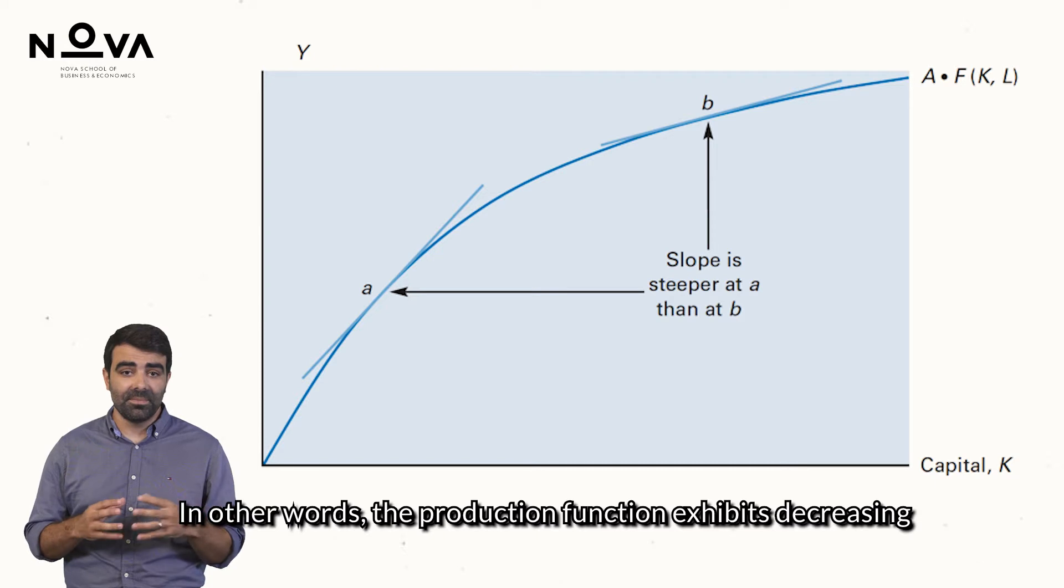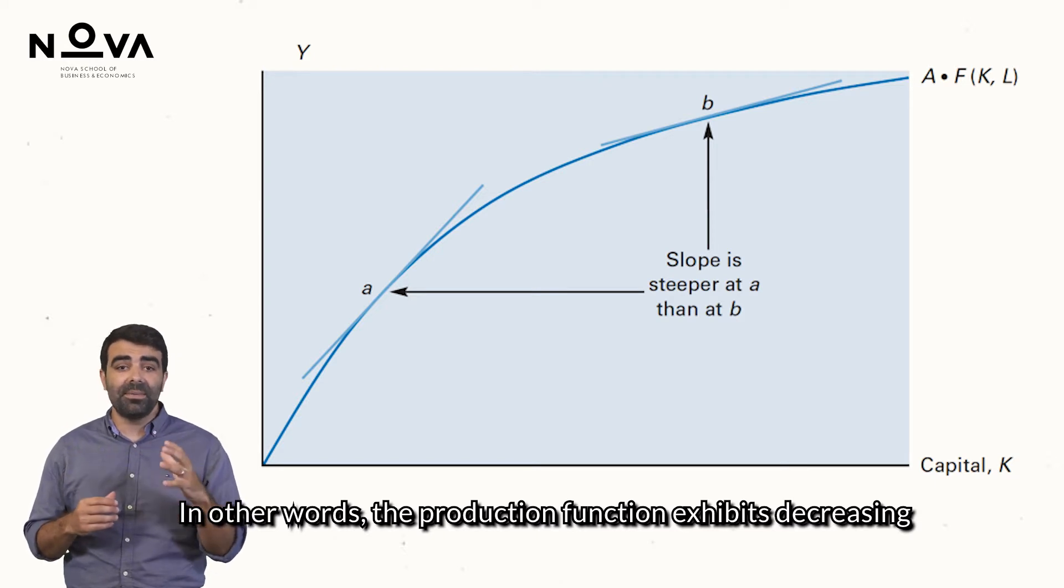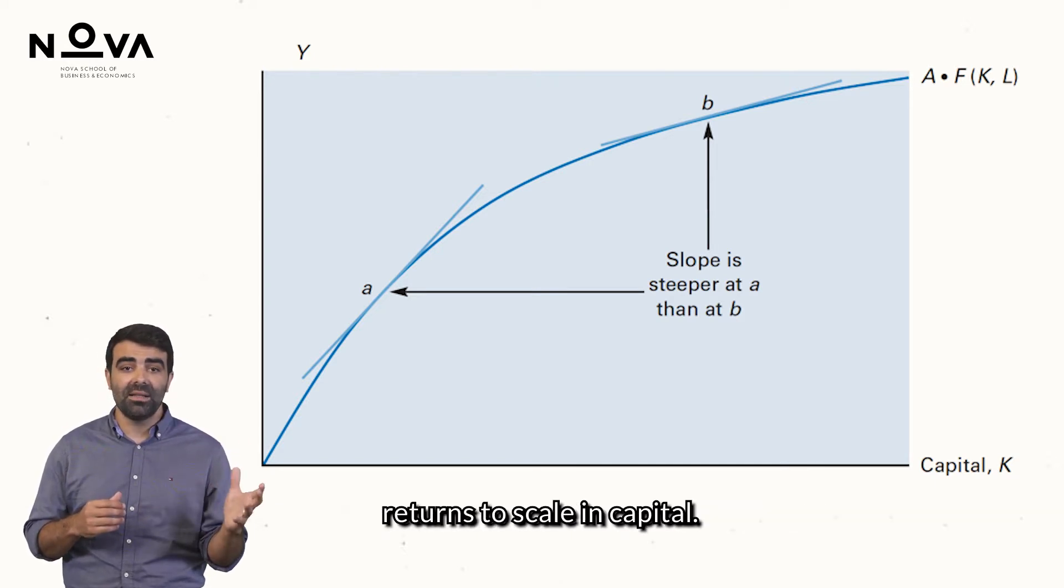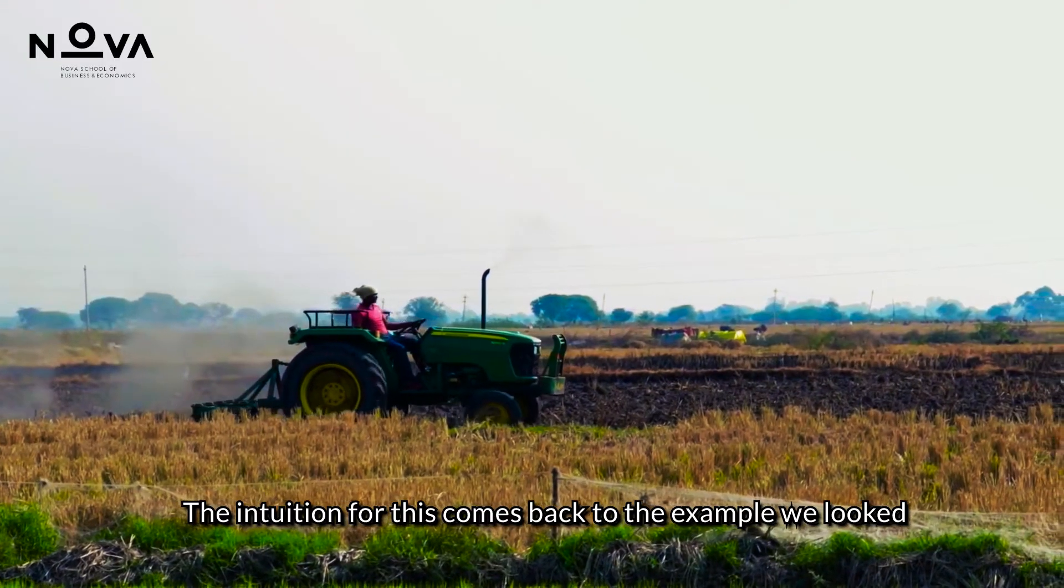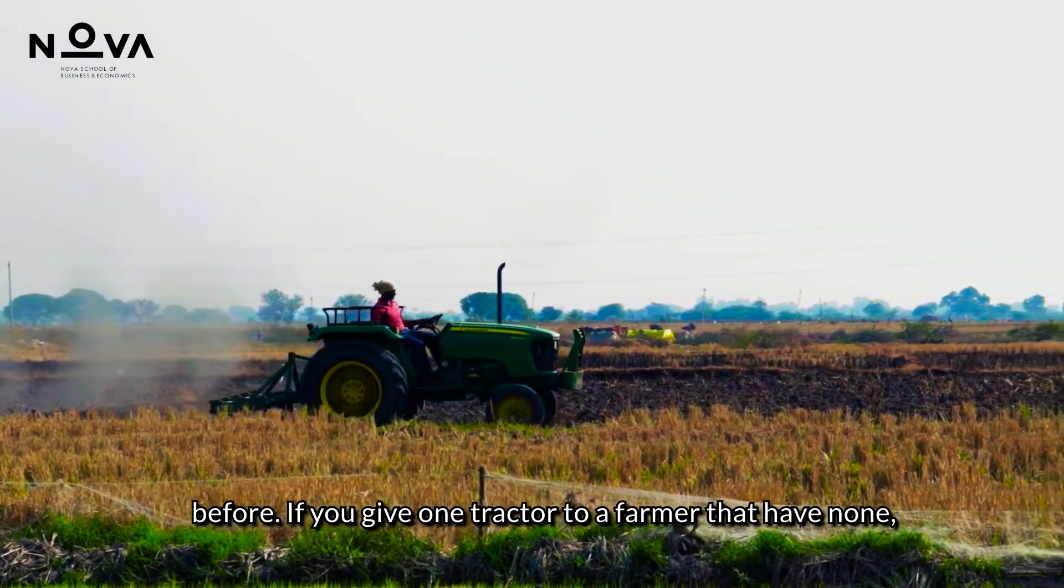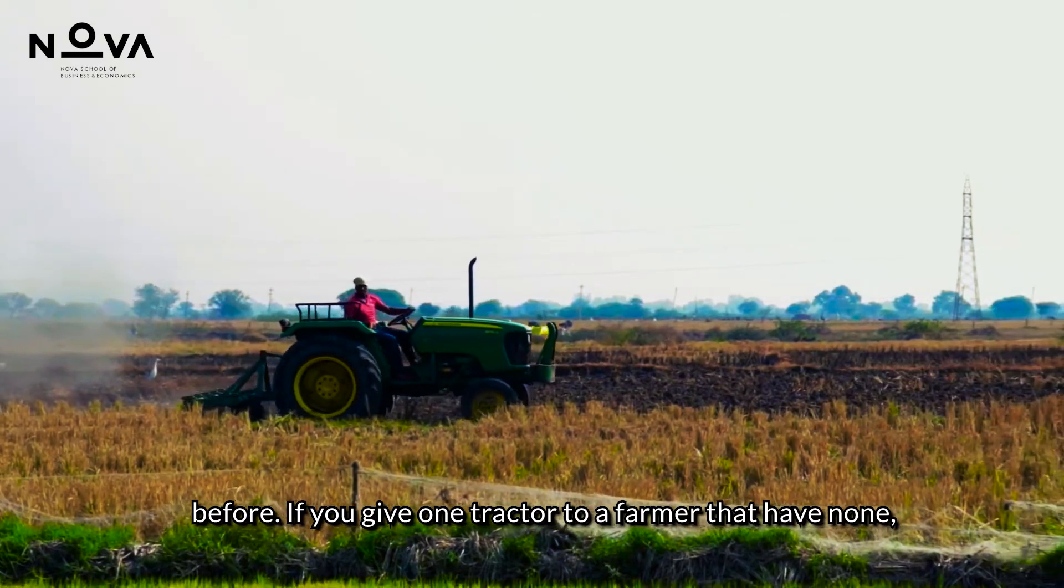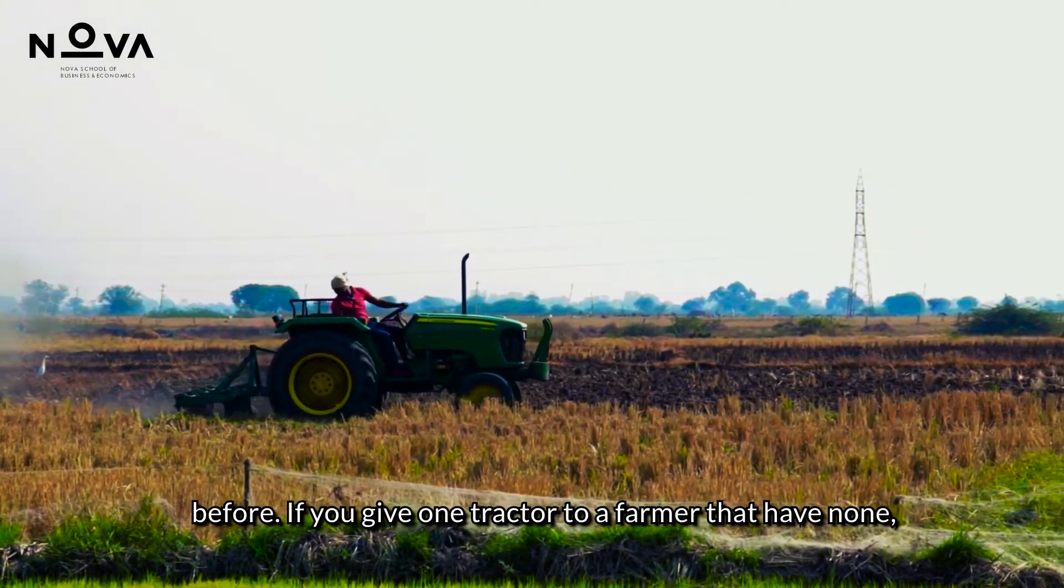In other words, the production function exhibits decreasing returns to scale in capital. The intuition for this comes back to the example we looked before. If you give one tractor to a farmer that has none,